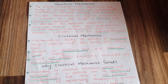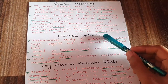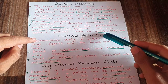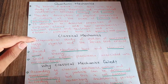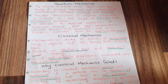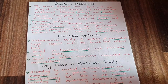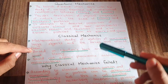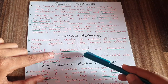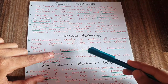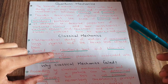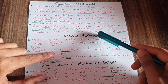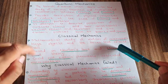Classical mechanics is an old mechanics based on Newton's laws and Maxwell's wave theory. Newton's laws include the first, second, and third laws of motion, and the law of gravitation. Another name for classical mechanics is Newtonian mechanics.